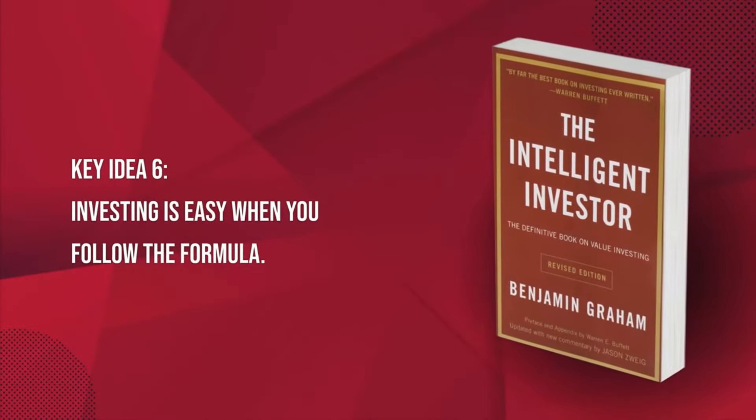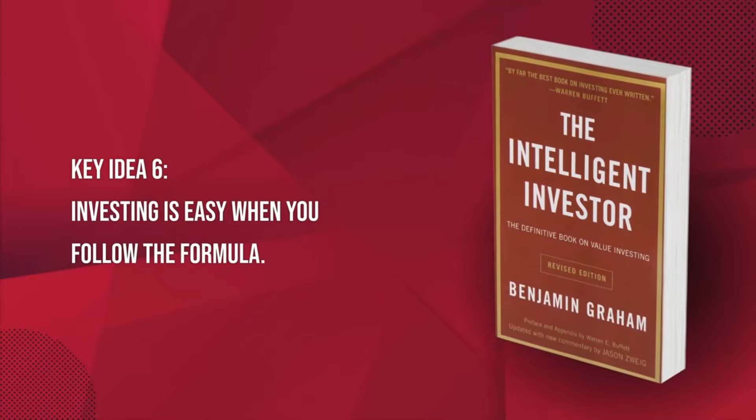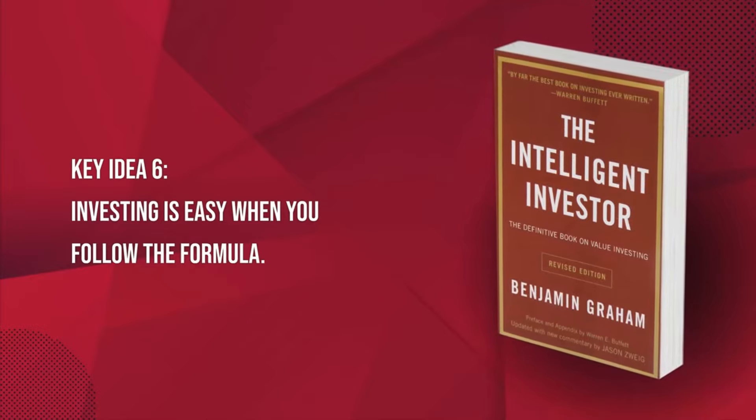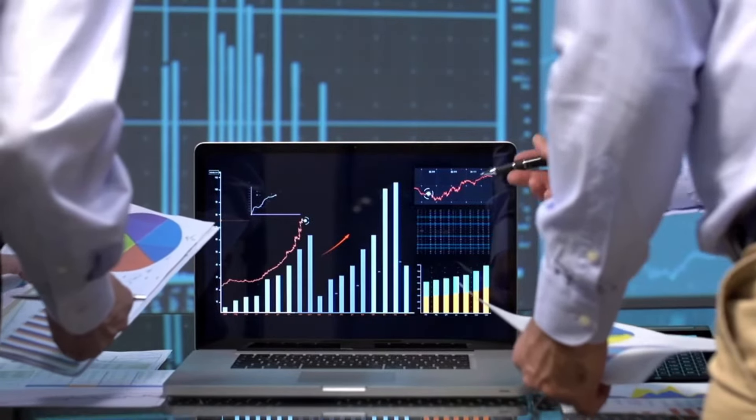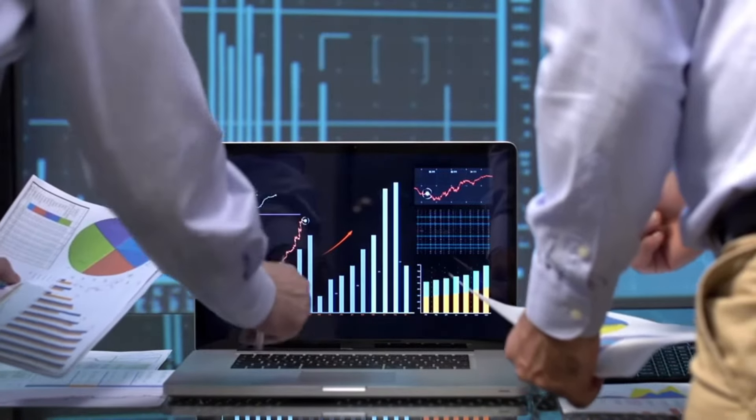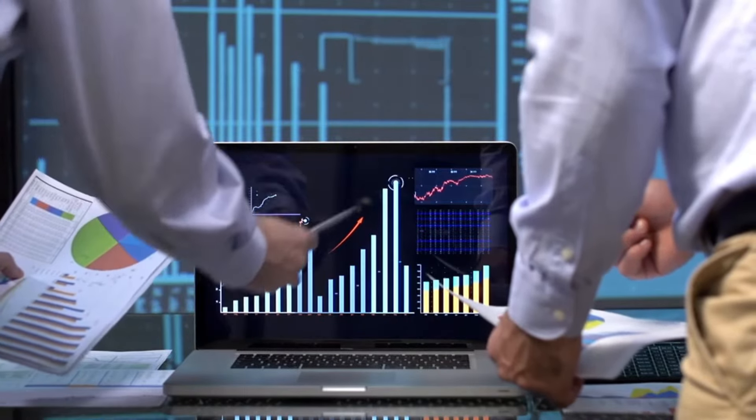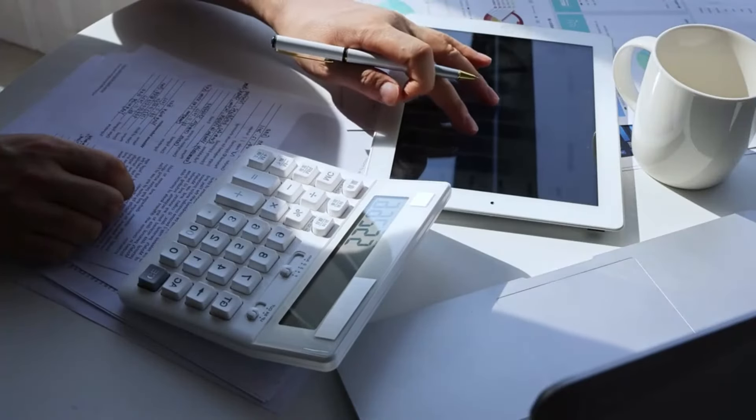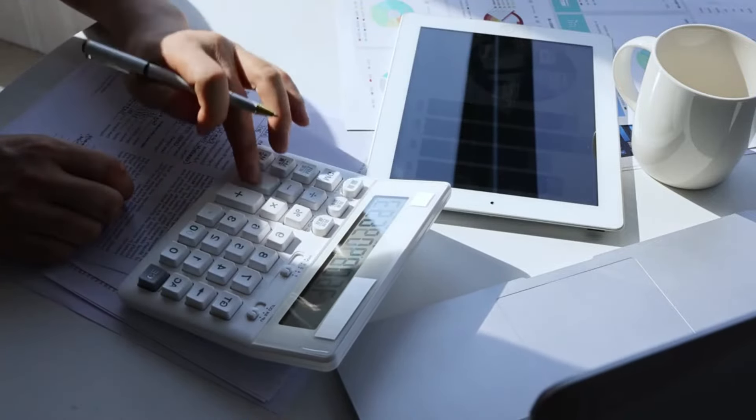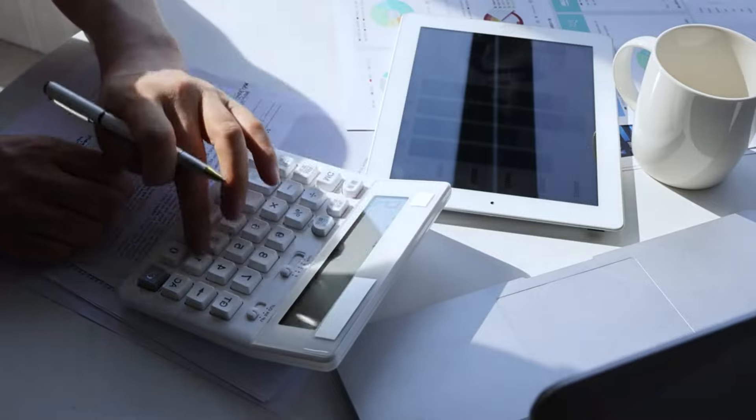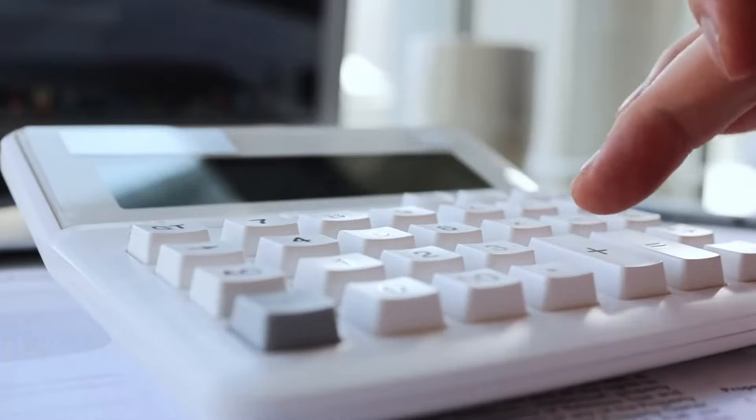Key idea 6: Investing is easy when you follow the formula. Once you've chosen the companies you want to invest in, then it's time to congratulate yourself. Most of your work is now complete. Now all you have to do is determine how much money you want to regularly invest and check your stocks from time to time. During this time, you will use a process called formula investing, in which you act strictly according to a predefined formula that determines how much money you will invest and how often.